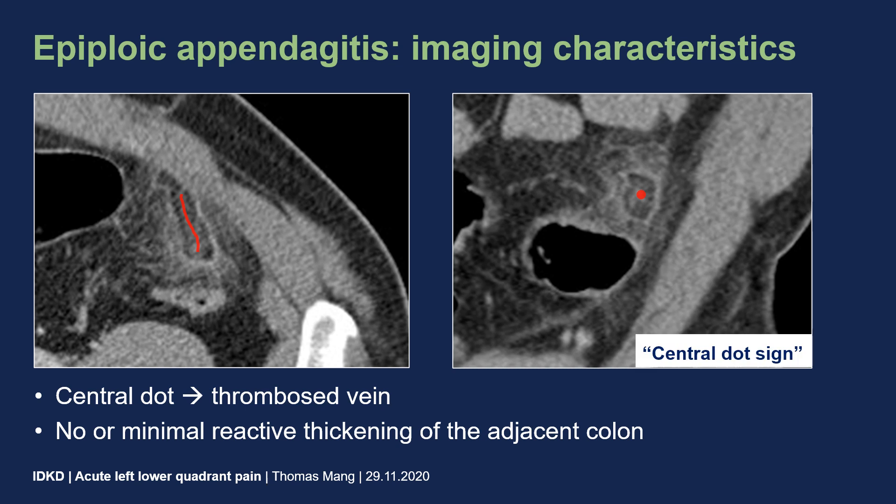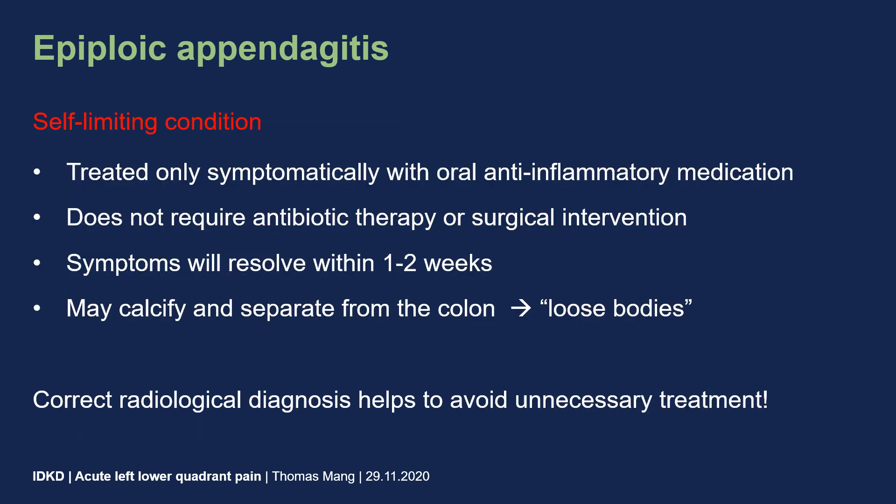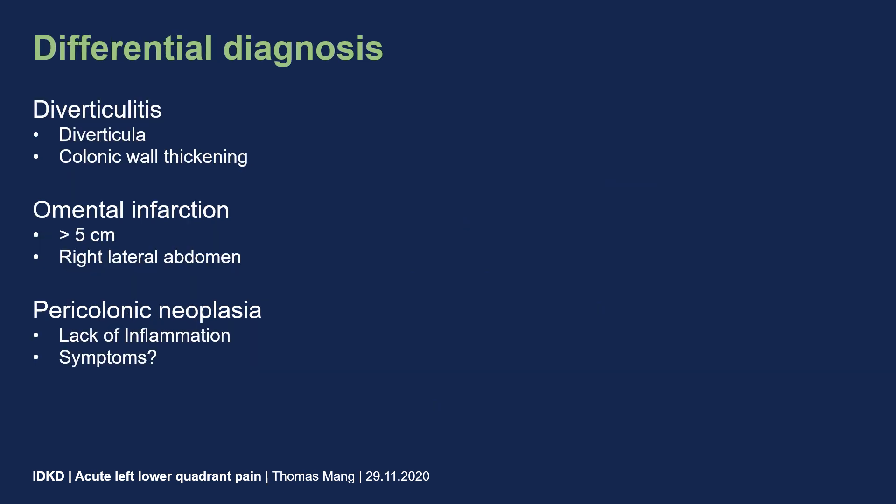Typically, there is no or only minimal reactive thickening of the adjacent colonic wall. Epiploic appendagitis is typically a self-limiting condition, treated only symptomatically with oral anti-inflammatory medication. It does not require antibiotic therapy or surgical intervention, and symptoms usually resolve within one or two weeks. Inflamed epiploic appendages may calcify over time and separate from the colon, forming loose bodies. Correct diagnosis is important as it helps avoid unnecessary treatment.